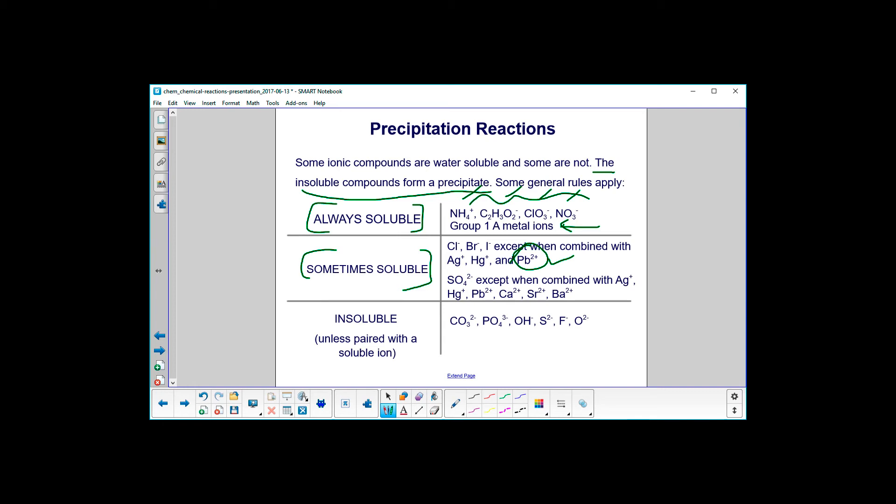Sulfate, except when combined with silver, mercury, lead, calcium, strontium, barium. And again, they are all ions.